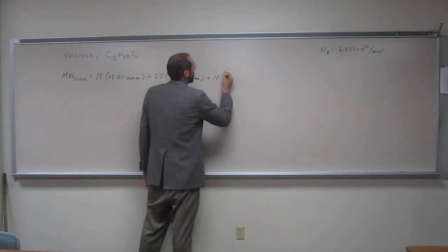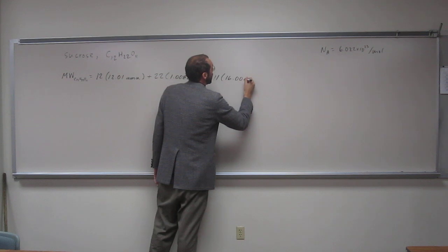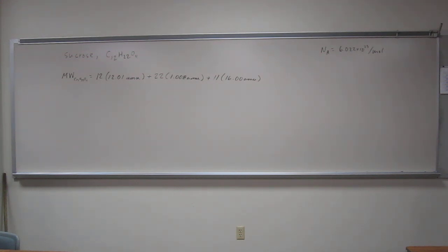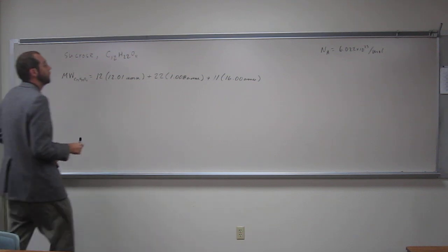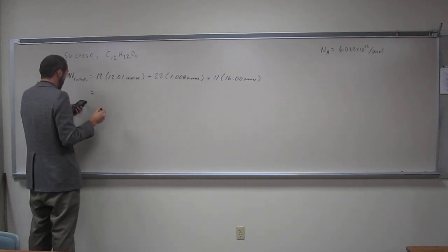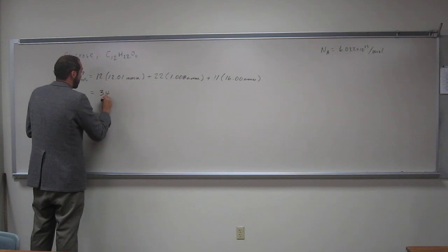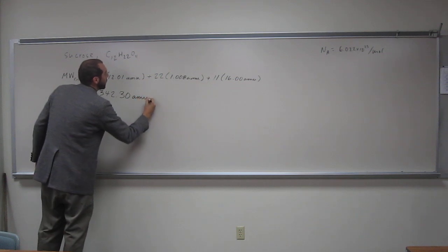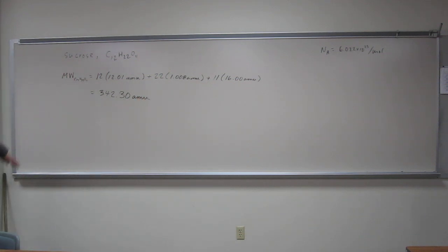Plus 11 times hydrogen. So just add those goods. So let's go to two digits past the decimals. So 342.30.